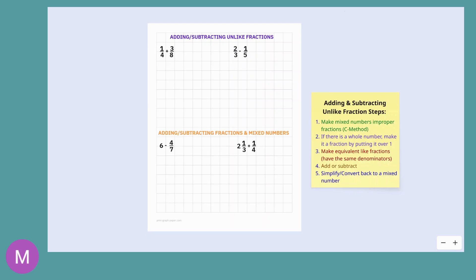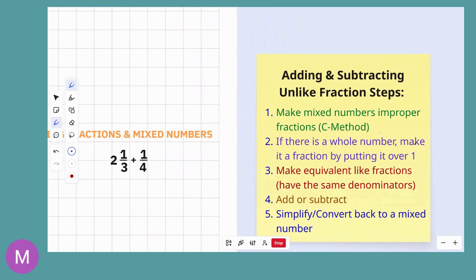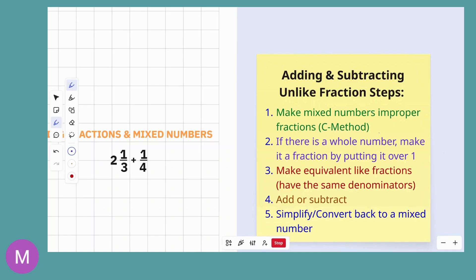Let's review the rules and steps for adding and subtracting unlike fractions. If you have a mixed number, it is best to change it over to an improper fraction using the C method. With addition, you can line up your mixed numbers vertically, add the whole numbers, and then make sure you have like fractions. With subtraction it can get complicated with borrowing, so we recommend converting to an improper fraction.